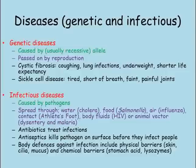Infectious diseases are caused by pathogens and can be spread through water, food, air, contact, body fluids, or animal vectors. Each disease is caused by a particular pathogen but spread in a certain way. To stop the spread of disease, we can use antiseptics to kill pathogens or use antibiotics to control an infection that is already happening. The body has a series of physical and chemical barriers to help defend itself against attacks from pathogens.